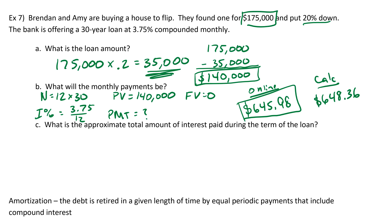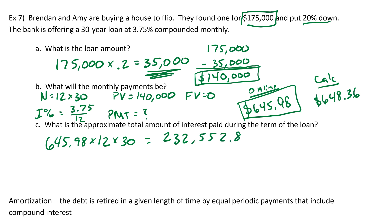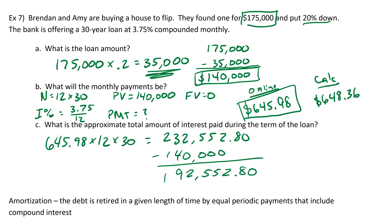For part C, the approximate total amount of interest paid during the loan: take $645.98, multiply by 12 times 30, and we get $232,552.80. Then subtract the $140,000 loan amount, and we get $92,552.80 — that's the total amount of interest paid over the life of this loan.